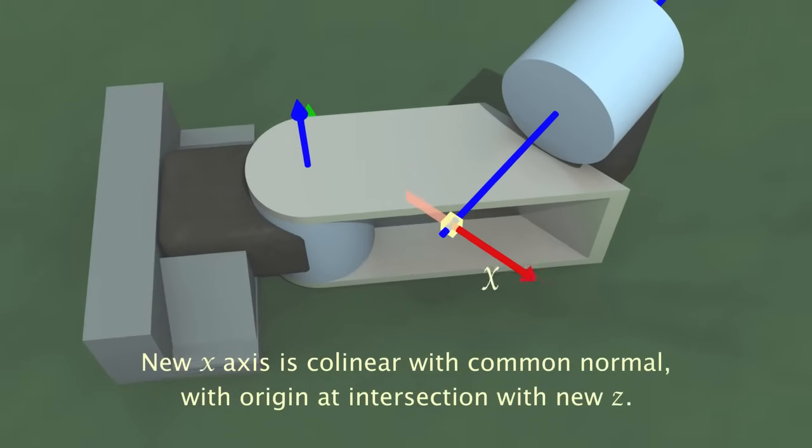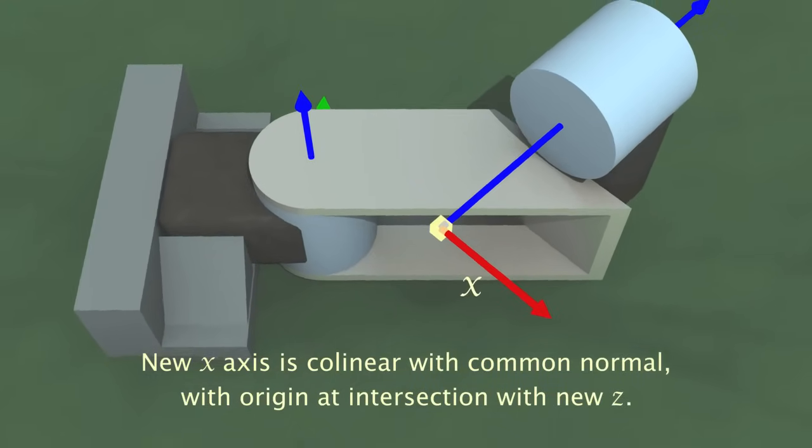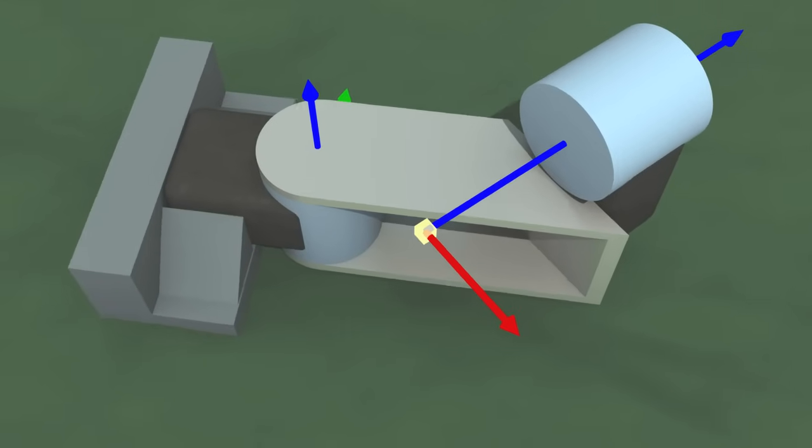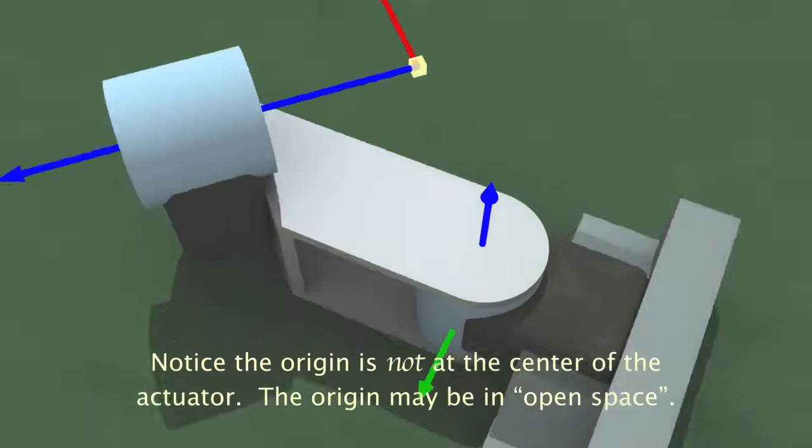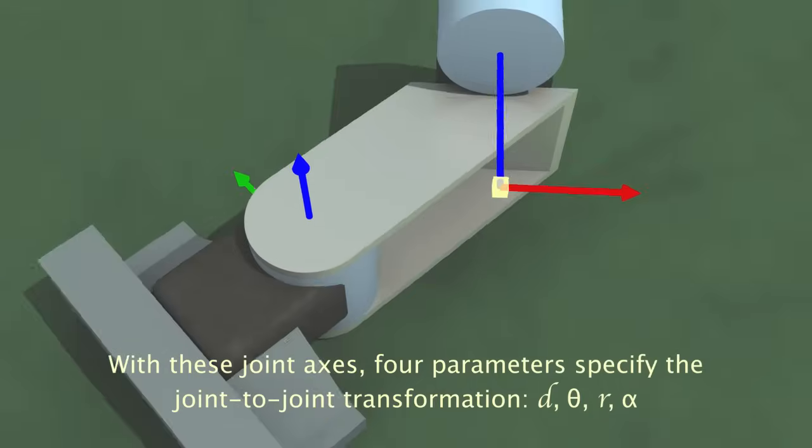The new x-axis points along the common normal and has its origin at the intersection with the new z-axis. Notice the origin is not within the physical actuator, because the DH parameters are only concerned with the motion of the links, not the physical placement of components.